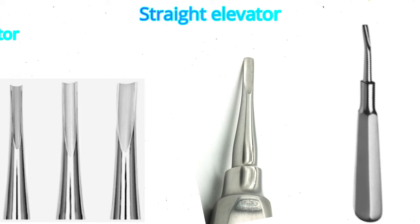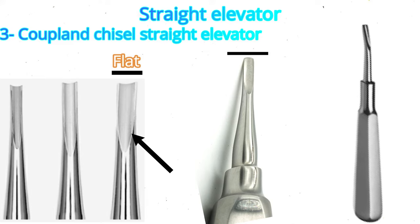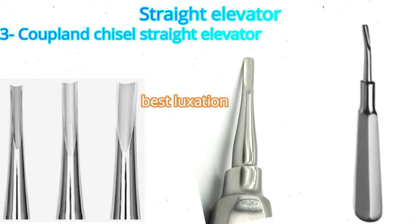The third one is the Copeland chisel straight elevator, which has a flat tip — not rounded — and a smooth concave inner surface. This one provides excellent luxation since the concavity is highly configured to the root. It can luxate an entire tooth before extraction and can be used in wedging and luxation.